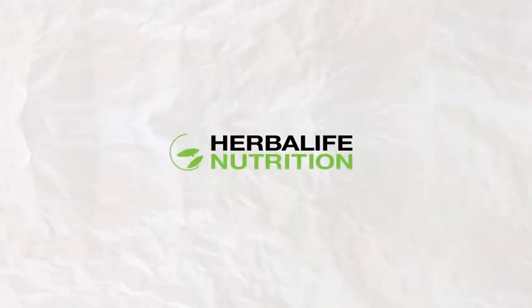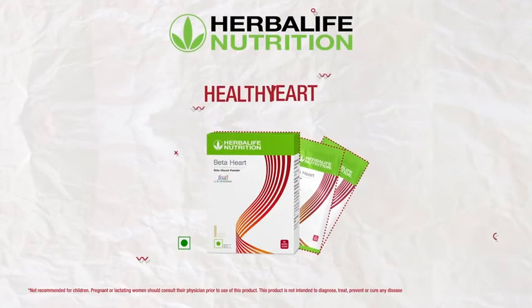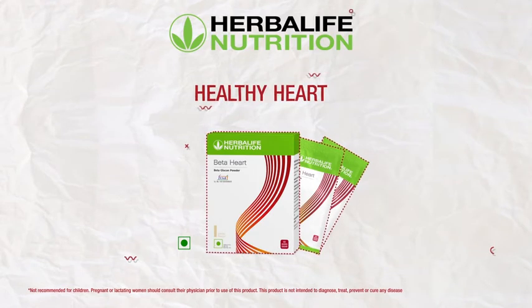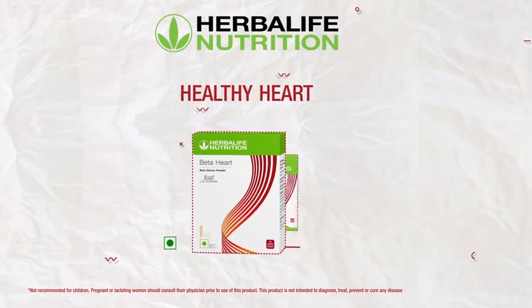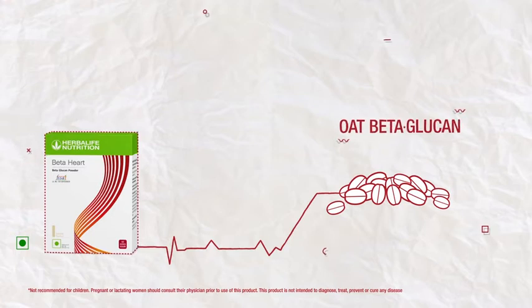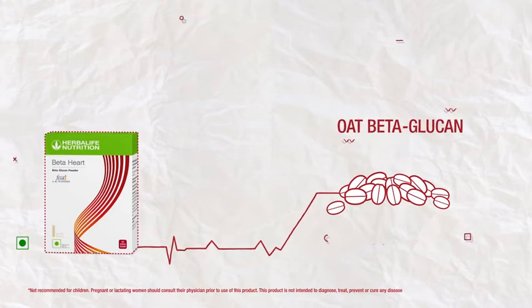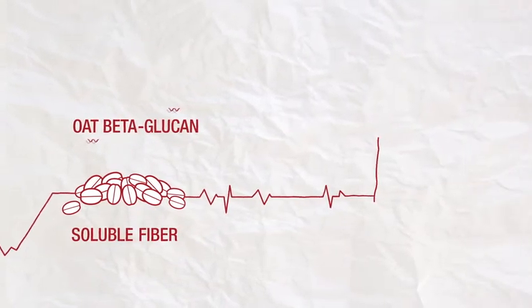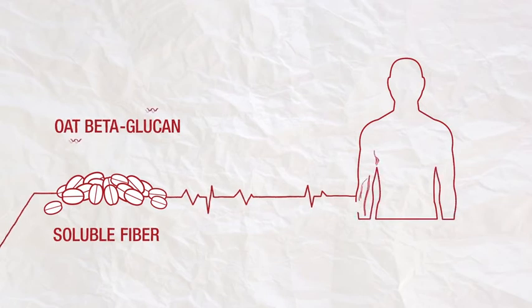Herbalife Nutrition brings to you Beta Heart, an easy way to add heart-healthy food to your diet. Beta Heart contains oat beta-glucan, a form of soluble fiber that helps maintain blood cholesterol levels within normal range.